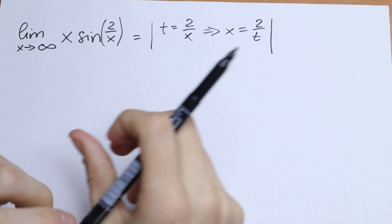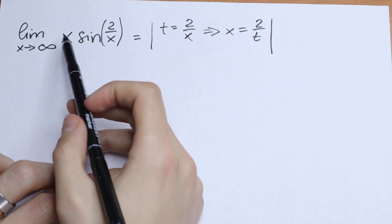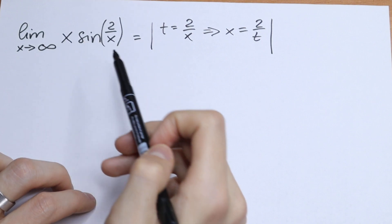Hello everyone, welcome back to higher mathematics. Today we have an interesting limit. What is the limit as x approaches to infinity of the function x times sine 2 over x?